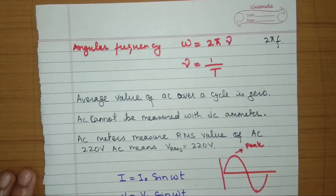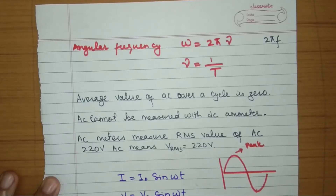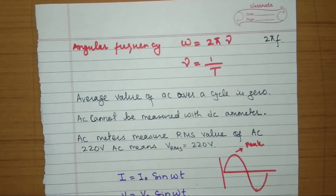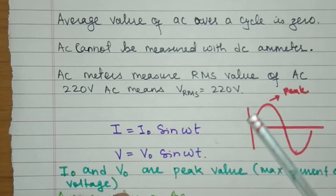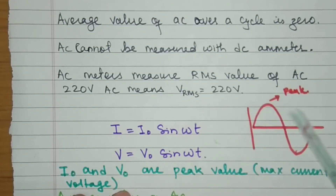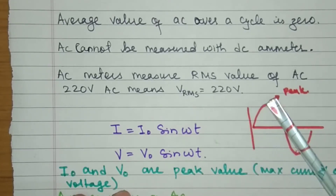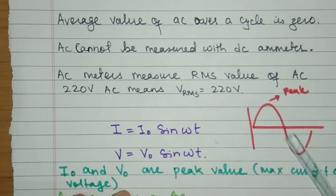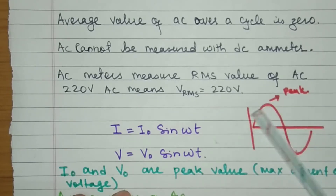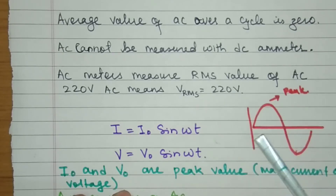Hello everyone, today in this video we are going to revise the chapter on AC current and we will see the important points from the chapter. Alternating current is the current which changes its magnitude and reverses its direction periodically — after equal intervals of time the direction of AC changes.